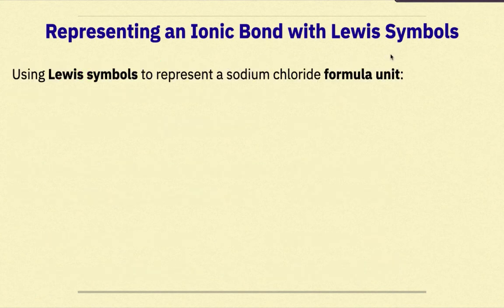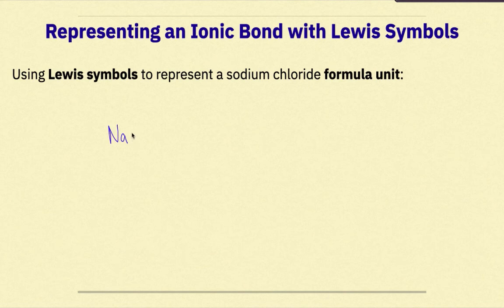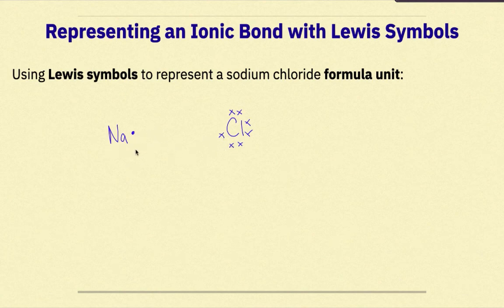Representing an ionic bond with Lewis symbols: using Lewis symbols to represent a sodium chloride formula unit. We know that sodium has 11 protons and 11 electrons, so sodium represented with Lewis symbols would be Na with one dot. Chlorine has 17 electrons and 17 protons, so Cl with 7 valence electrons. When forming this ionic bond, the sodium atom is going to give up its 1 valence electron and donate it to the chlorine atom.